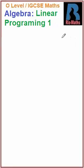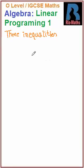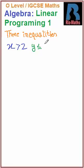We shall have 3 inequalities which we have to plot on the graph paper. The first is x is greater than 2, the second is y is less than or equal to 6, and the third is y is greater than or equal to x.